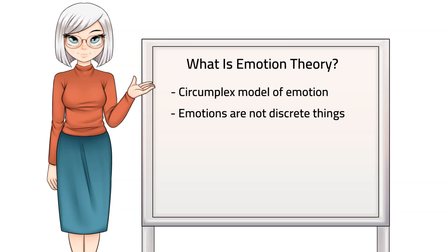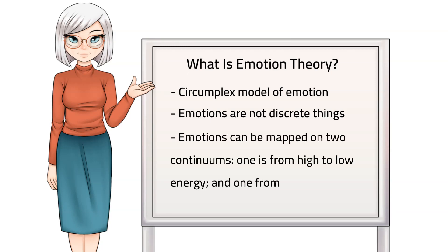The Emotion Circumplex Model suggests that emotions can be mapped on two continuums. One is from high to low energy, and one is from high to low pleasure. So an emotion like sadness would be low energy and low pleasure, while an emotion like anger would be high energy and low pleasure. This model also accounts for the fact that emotions are not always the same intensity. For example, we might feel a little scared, a lot of fear, or downright terrified.